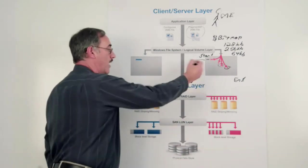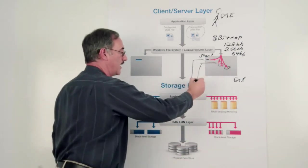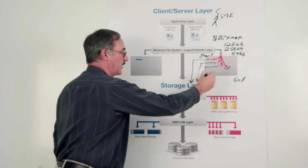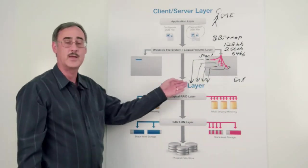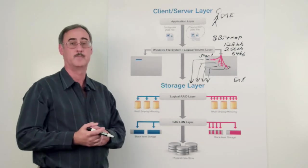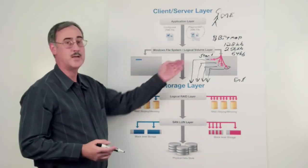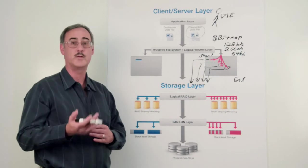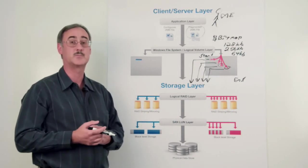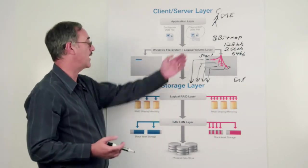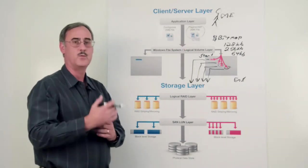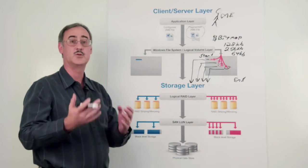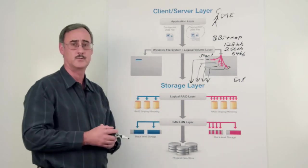So we have one IO, we'll have another IO request, a third and a fourth in this example. Each of these IO requests takes a measurable amount of time. In fact, this is measured within the Microsoft Windows performance monitoring utility called a split IO. It's where your application says, do this one thing, but then Windows has to translate it into multiple additional requests.